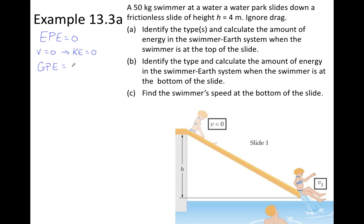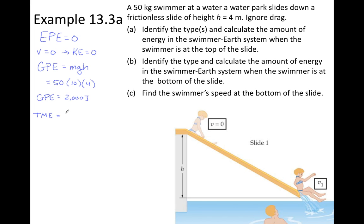Last section we introduced the formula for gravitational potential energy: mass times G times H. We're given the mass of the swimmer — 50 kilograms. G near the surface of the Earth is 10, and the height is four. So the system starts with a gravitational potential energy of 2000 joules. Adding up the three types of energy — elastic potential, kinetic, and gravitational potential — we get a grand total of 2000 joules to start with.